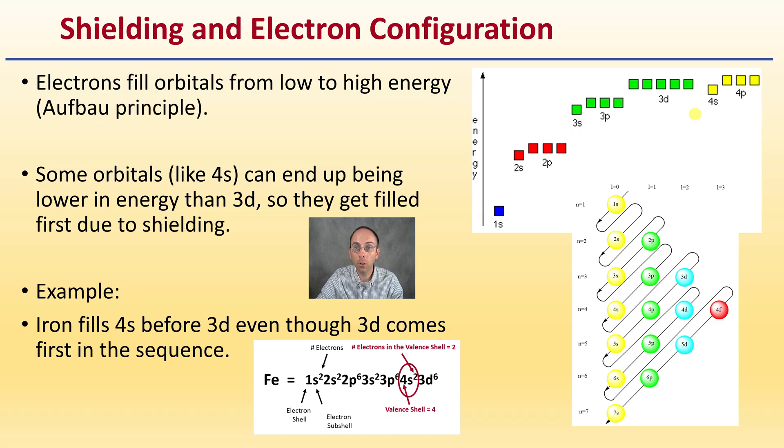The 4s is a lower energy level than the 3d, which is why when we're writing things out, it doesn't go 1, 2, 3, 4, 5 all the way up. That 4s comes before that 3d because of the energy level corresponding to that due to the shielding effect.